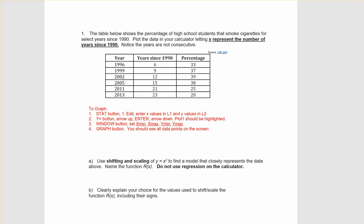The next thing we need to do is set a window. Taking a look at our X values, the smallest X value we have is 6, so we should choose something smaller than 6, perhaps 0. And our biggest X value in this case is 23, so for the X max, say 30.